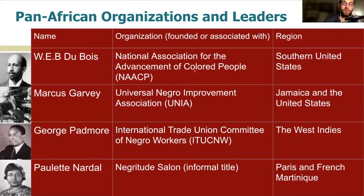I've created a chart with some of the more prominent pan-African leaders and the organizations they either founded or were associated with, and the regions in which they operated. You can see that pan-Africanism was a broad movement that spanned the entire African diaspora in the Americas and the Caribbean, as well as Africa itself. In many ways, pan-Africanism truly represents the international nature of anti-colonial struggles during this time.